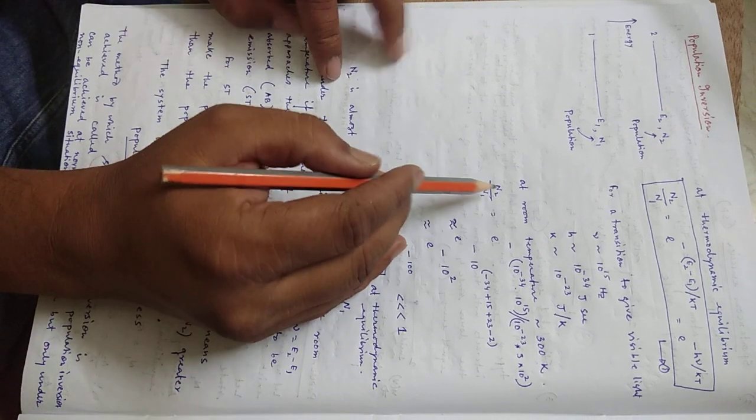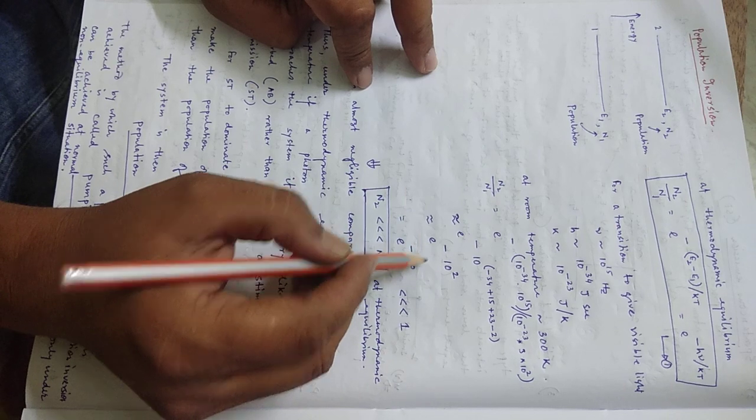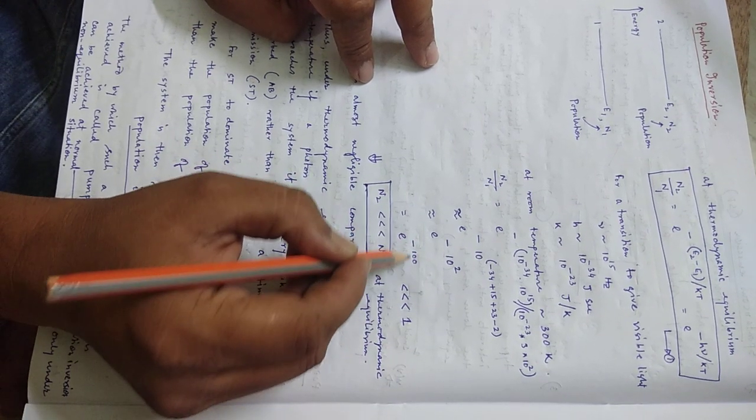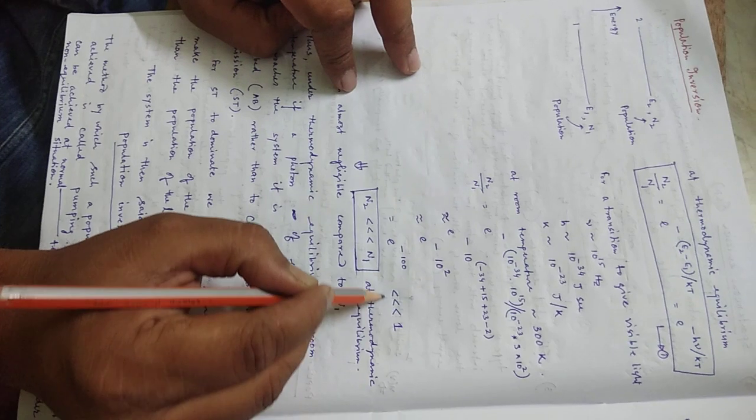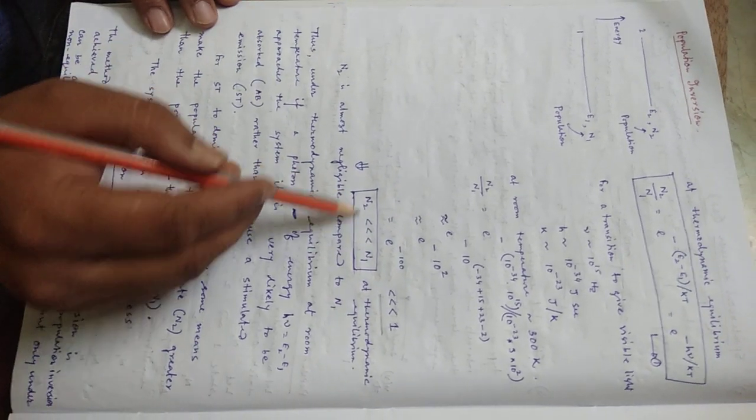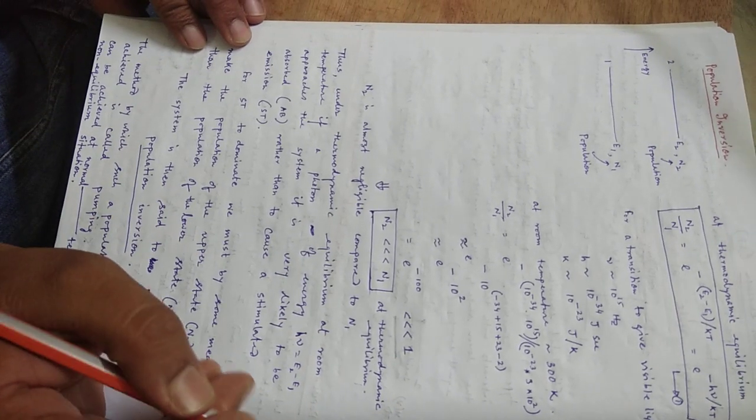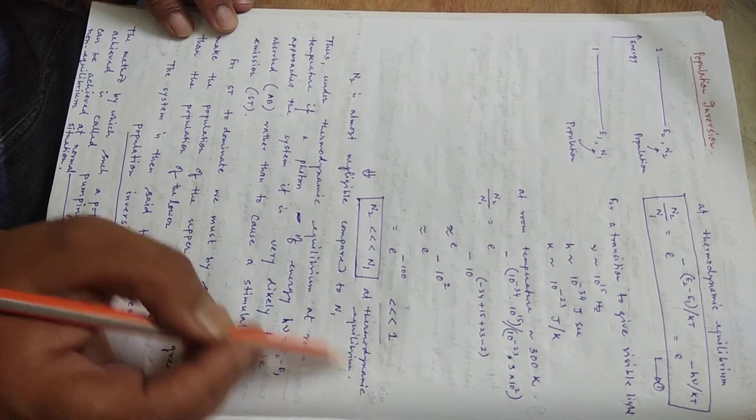then N2 by N1, if you calculate it from this formula e to the power of minus H nu by KT, then it comes out to be e to the power of minus 100, which is pretty low, much much less than 1. So that means N2 is much much less than N1 at room temperature for visible light emission and at thermodynamic equilibrium.